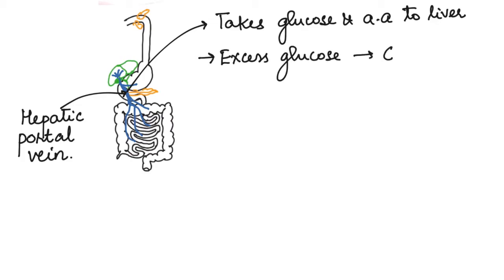In the liver, excess glucose is converted to glycogen and stored, and the excess amino acids are broken down into urea to be excreted.